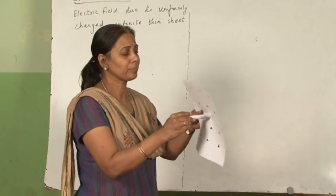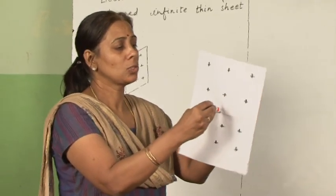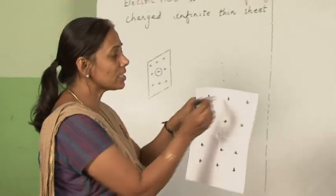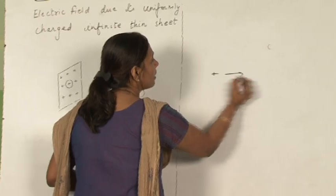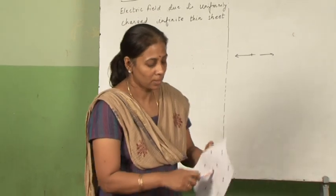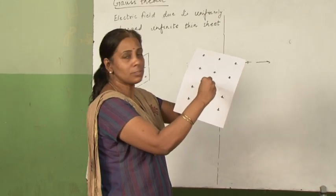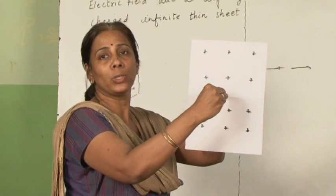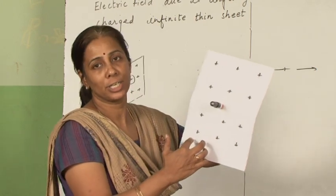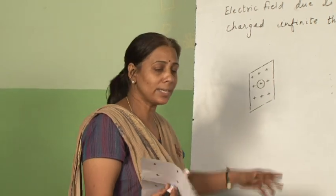If you just see, suppose this is my thin charge sheet. Your Gaussian surface will be like this from both sides, because it is a thin sheet. If you just consider a single charge, you will have field lines on both sides. So if you take this much of area, this will be a Gaussian surface — equally on this side also. Suppose I want to find the electric field at this particular point due to this charge sheet. The Gaussian surface here will once again be a cylinder.